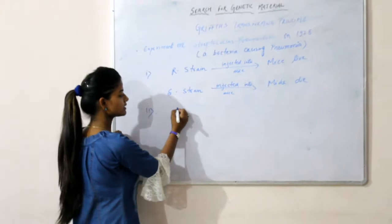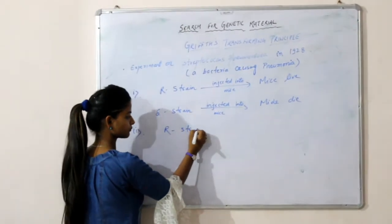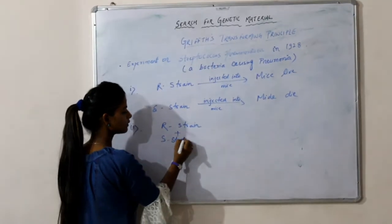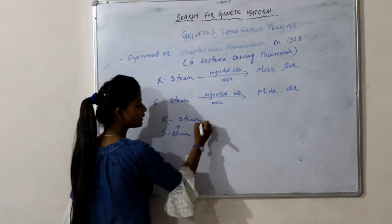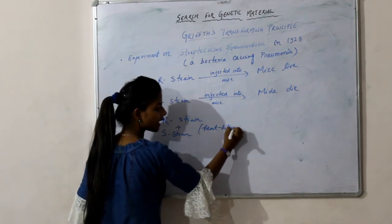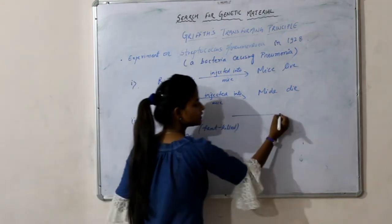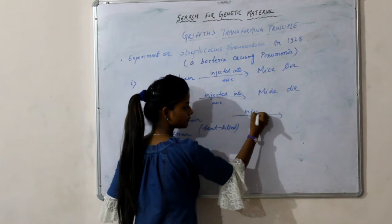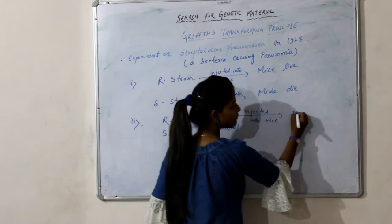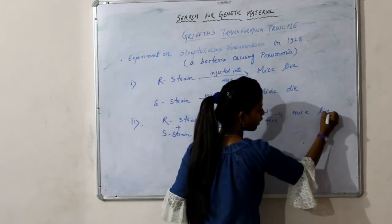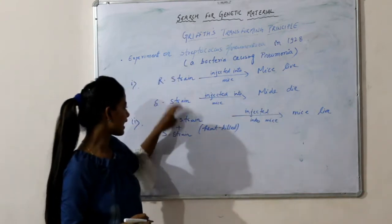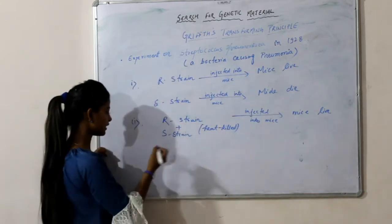So we can say that both R-strain and S-strain, when heat-killed — meaning killed by heating — and injected into mice, the mice live and do not develop pneumonia, because the bacteria have been killed.